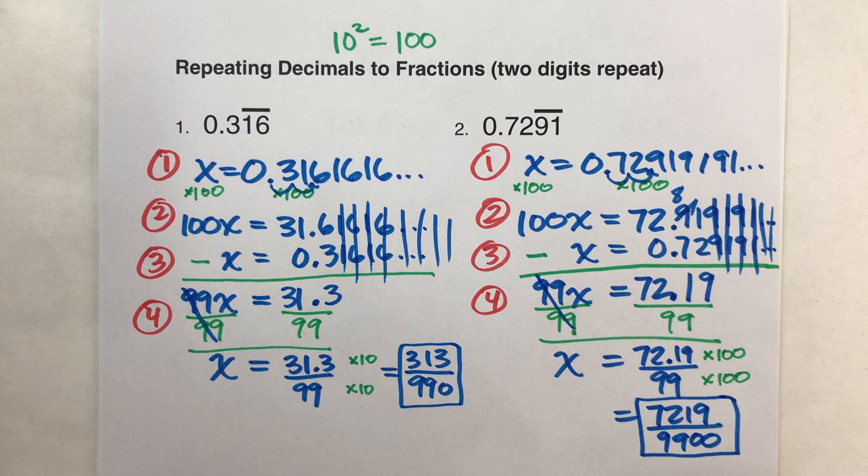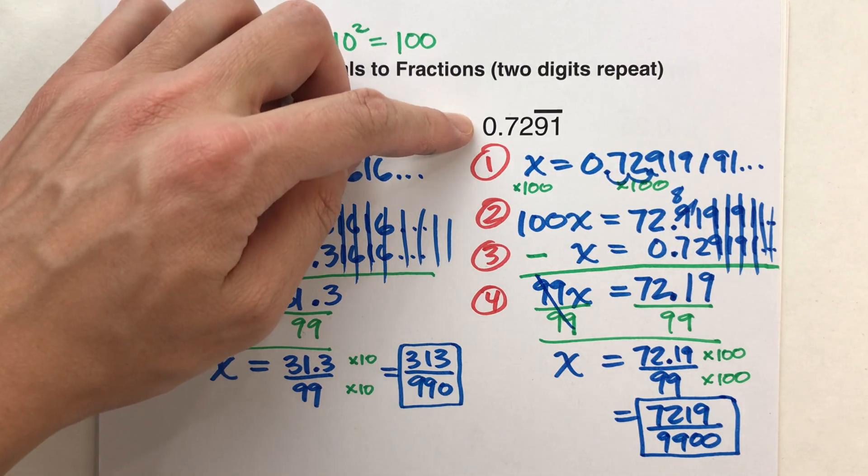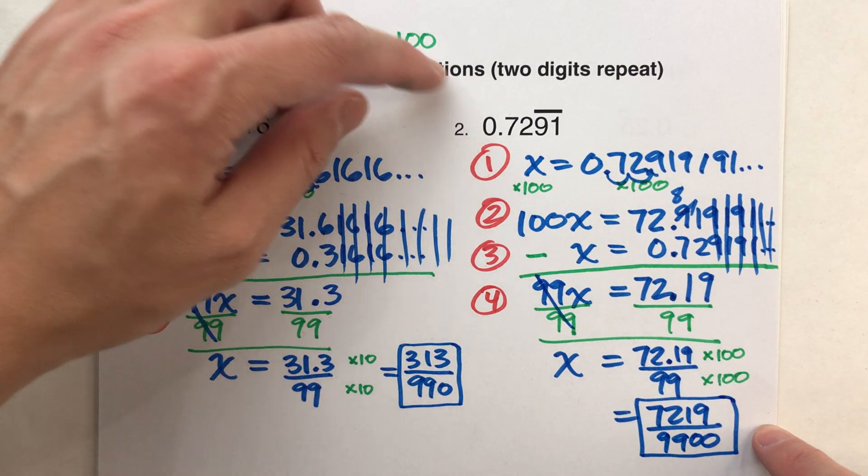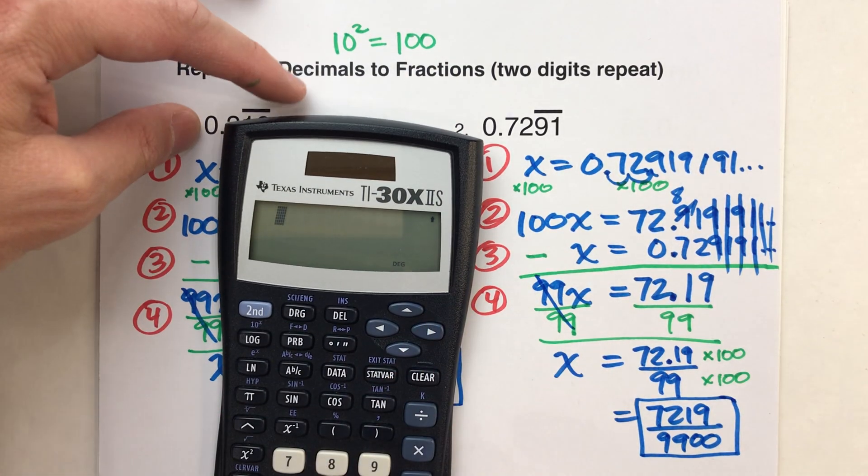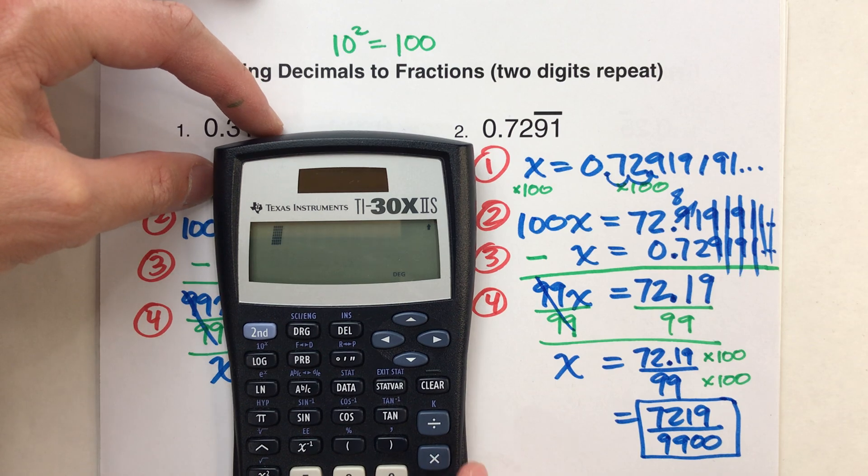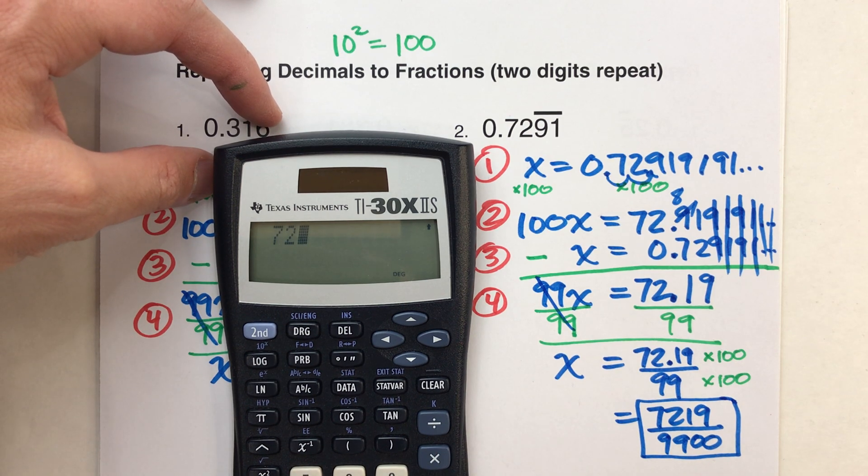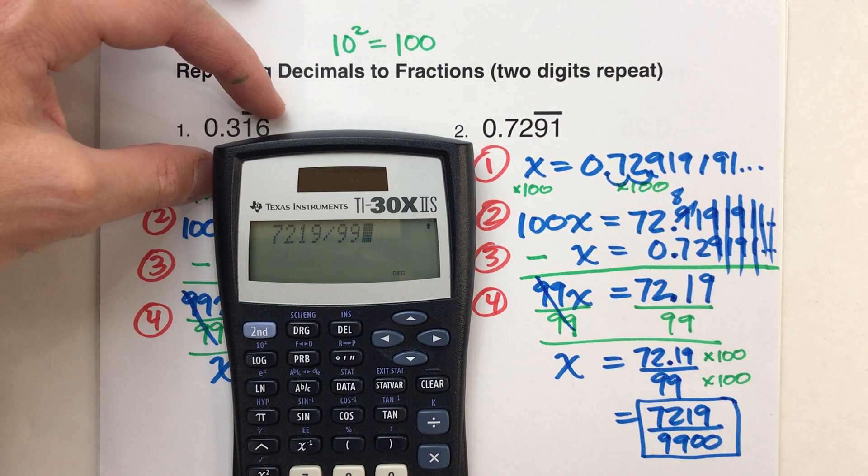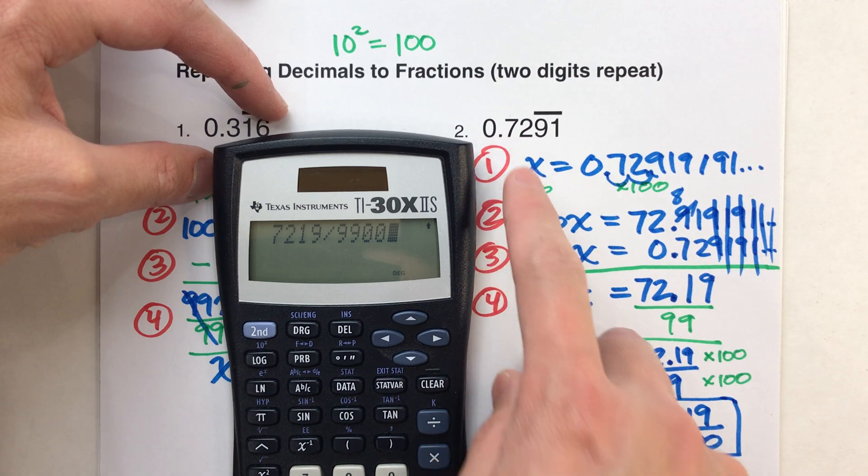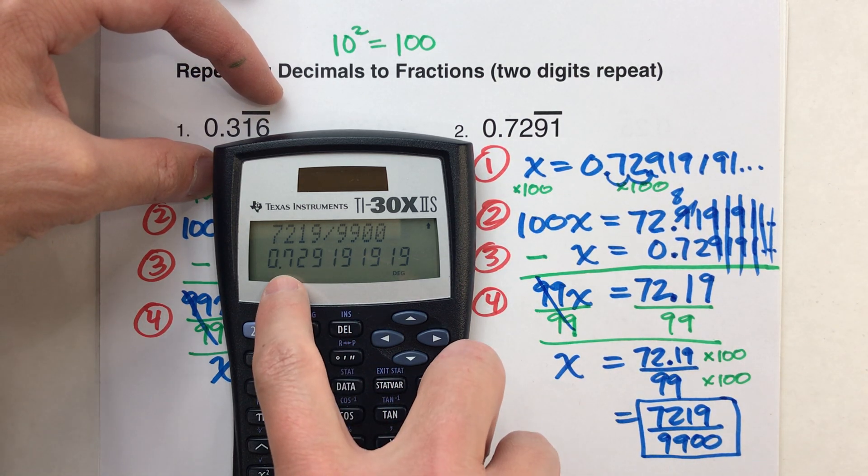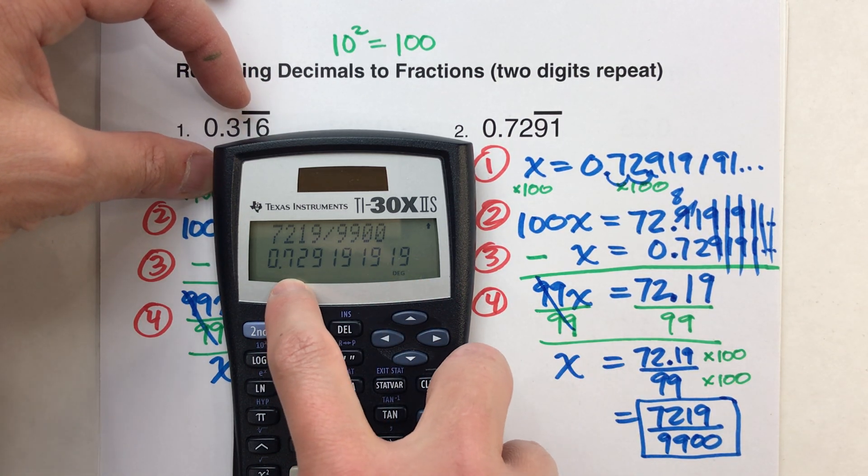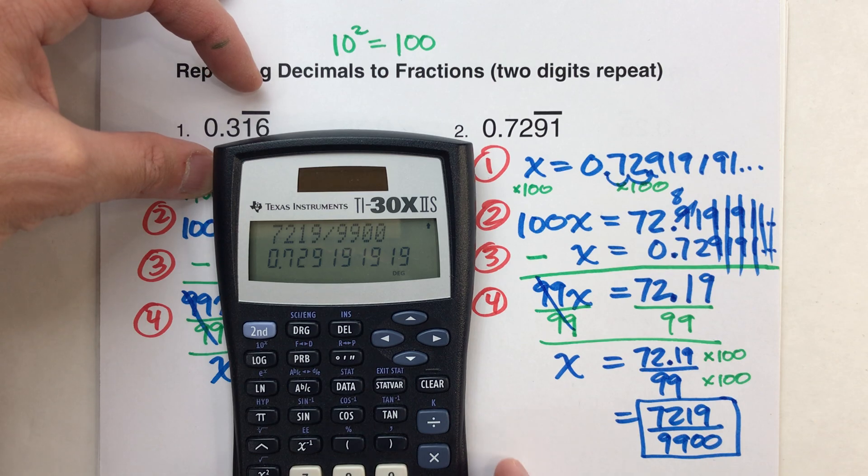This is the fraction I was looking for that's equal to that repeating decimal. It's kind of an ugly fraction, but just to be sure, let's check it. 7219 divided by 9900 should get me 0.7291919191. There it is. 0.7291919191.